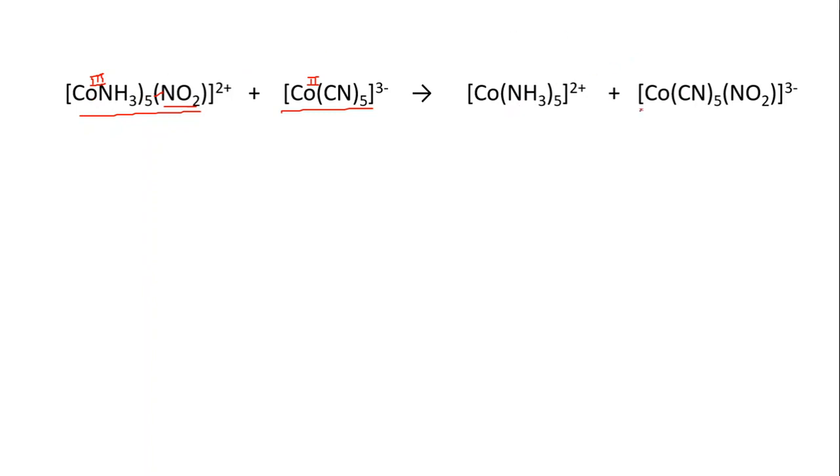What is important is just take note of the connections—how the nitro group is connected to the cobalt in the product as well as in the reactant. You can see that actually in both cases the nitro group is connected to cobalt through nitrogen.